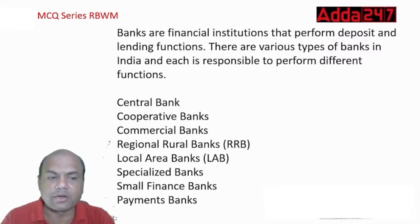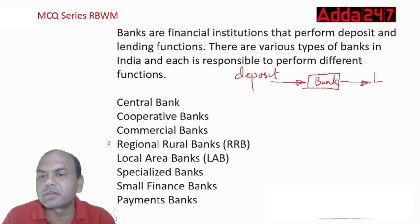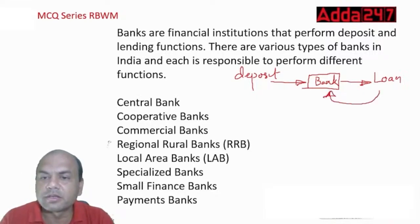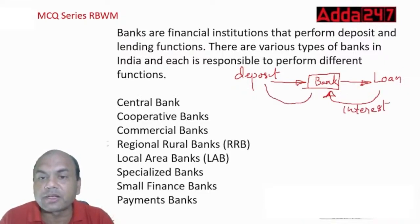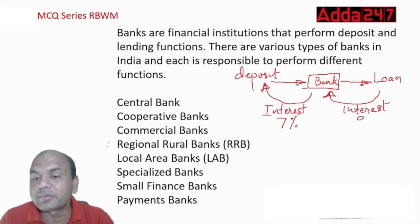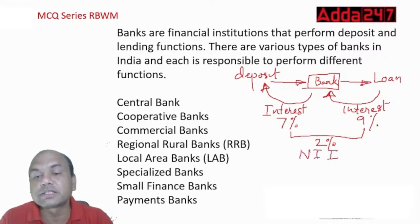A depositor deposits money, the bank gives it as a loan, and the loan recipient pays interest. The bank also pays interest to the depositor. The difference — for example, 9% charged on loans minus 7% paid on deposits — is 2%, known as NII (Net Interest Income). NIM (Net Interest Margin) equals NII divided by yielding assets.